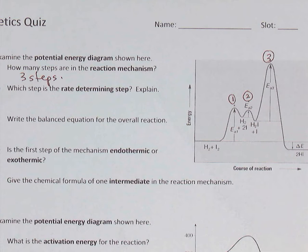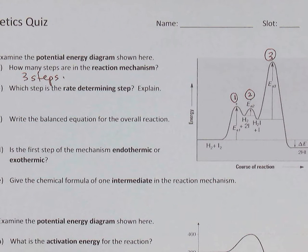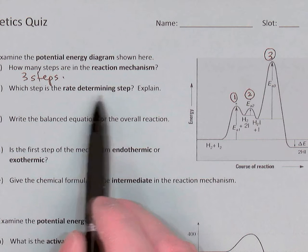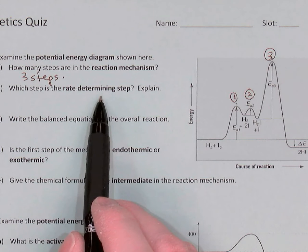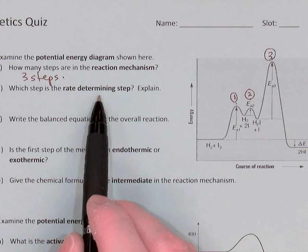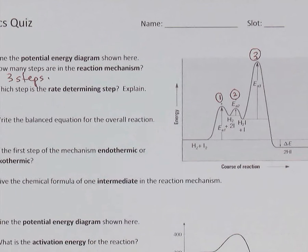Recall that the reaction mechanism simply refers to the sequence of steps — the sequence of collisions — that makes up the overall reaction process. Which step in the mechanism is the rate-determining step? Well, that's the slowest step of the mechanism, but how do I tell that from a diagram?